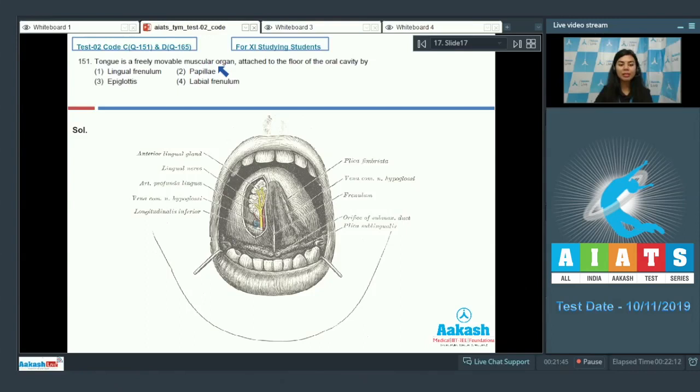Tongue is a freely movable muscular organ attached to the floor of the oral cavity by lingual frenulum, papillae, epiglottis, or labial frenulum. Tongue, which is shown here, is a voluntary muscle and a glandular structure. It occupies the floor of the mouth and is connected to the floor of the mouth by a fold of tissue known as lingual frenulum, which can be seen in this region.